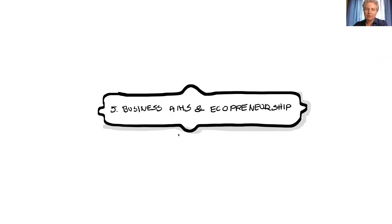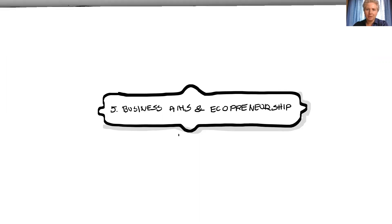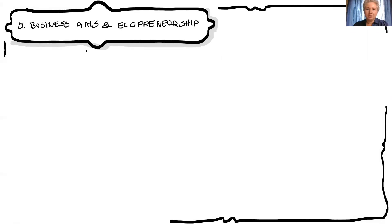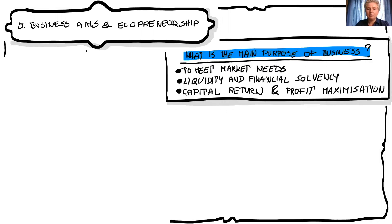We will look at how environmental issues are seen from the micro level of economics, from the business side. First of all, what is the main purpose of the business? The answer depends on who we ask. From the marketing or sales manager point of view, the answer is that the main purpose of the business is to meet market needs. From the financial manager point of view, it will be liquidity and financial stability.